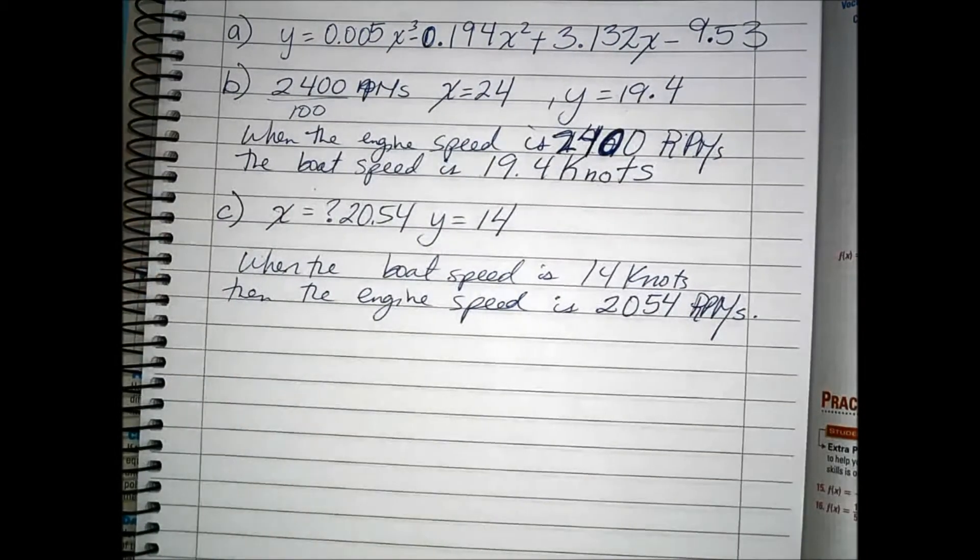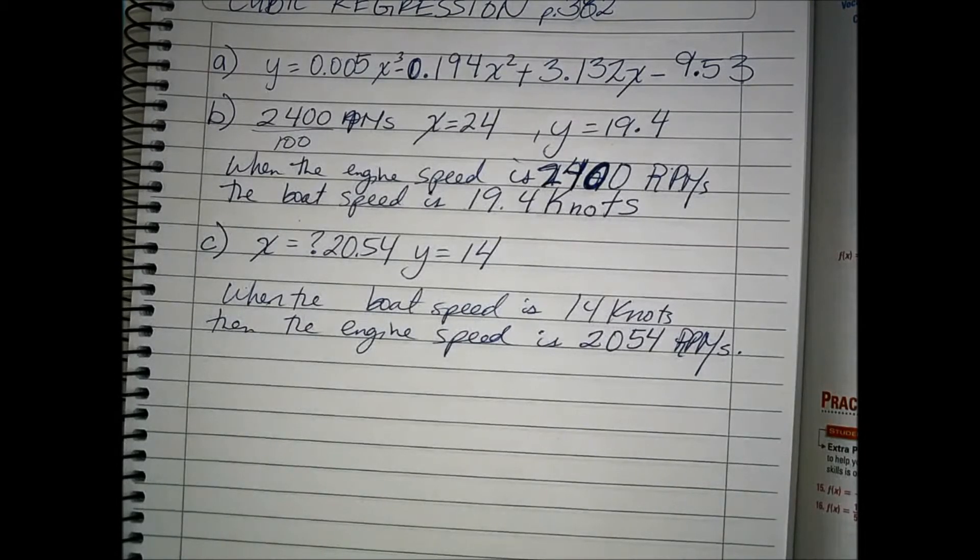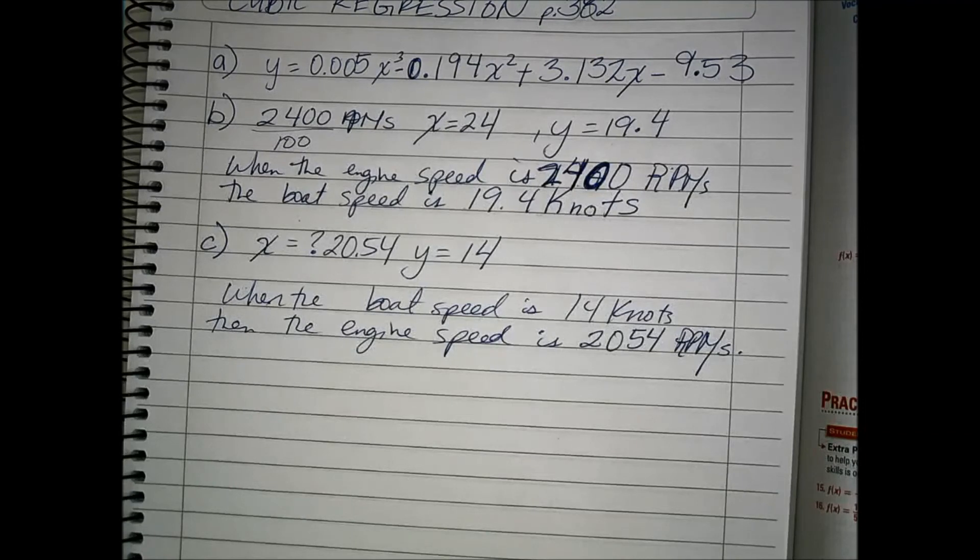And there we have an example using cubic regression and using the intersect feature and the table values, as well as the value feature, in order to find inputs and outputs after we have used the cubic regression to find the polynomial.